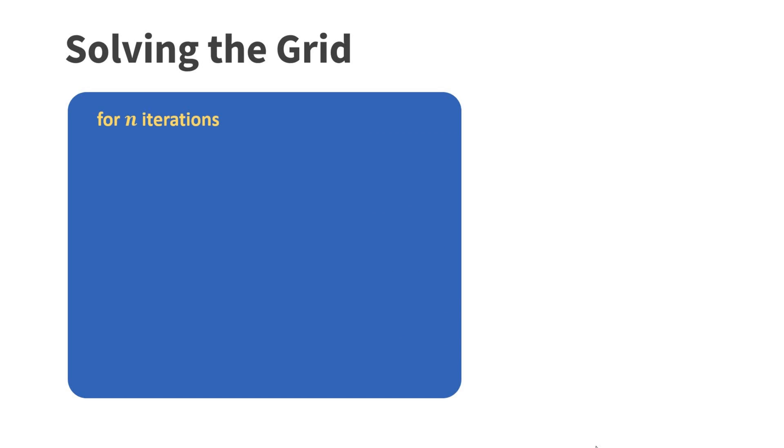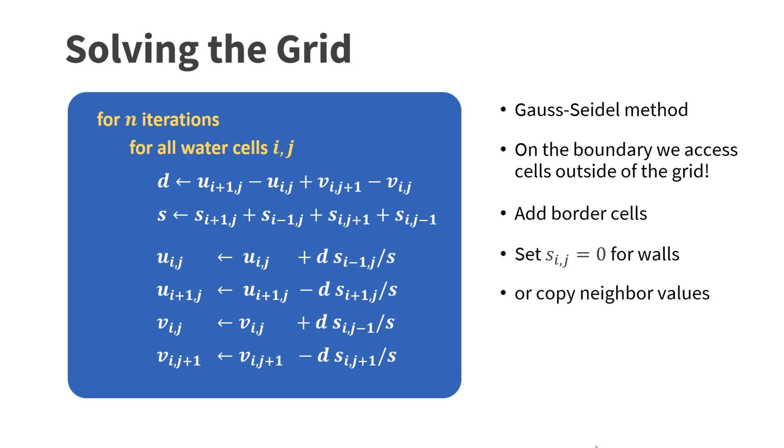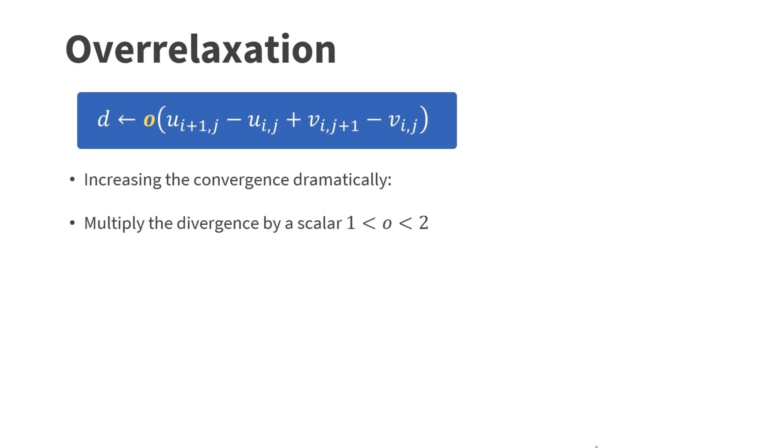To solve the entire grid, we use multiple iterations. In each iteration, we run through all the water cells. For each water cell, we perform the projection step as discussed before. This method is called the Gauss-Seidel method. It's probably the simplest method to solve systems of equations. We have to be careful. On the boundary, we access cells outside of the grid. One solution to this problem is to add boundary cells that we do not change. We either set them to walls or copy the values of neighboring cells that are inside the grid. As we saw, the Gauss-Seidel method is very simple to implement. However, it needs more iterations to converge than global methods. Here is a simple trick to speed up convergence dramatically. It's called over-relaxation.